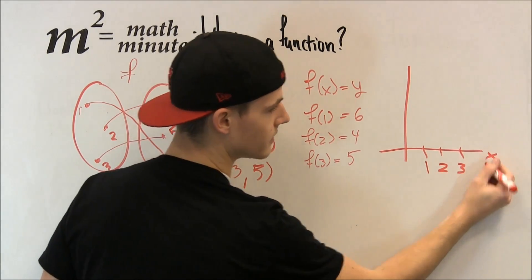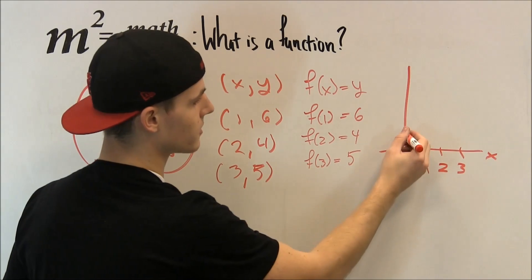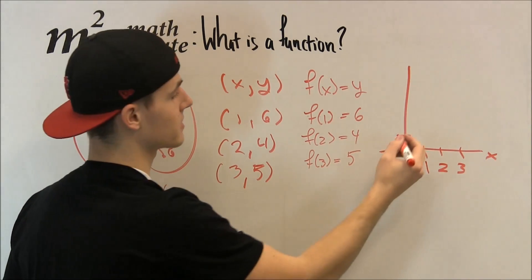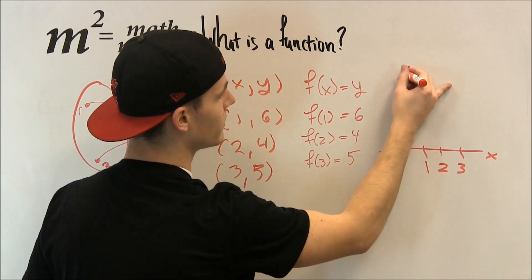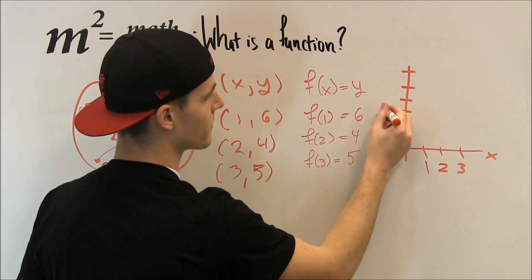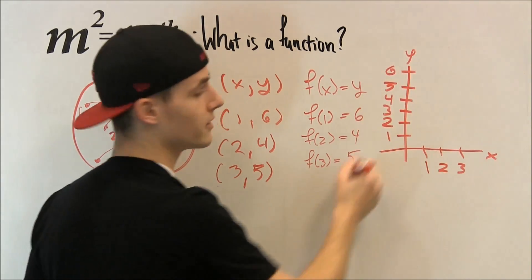And then we're going to mark down what y value they correspond with. So we have to go all the way up to 6. So 1, 2, 3, 4, 5, and 6. And these are our y values.